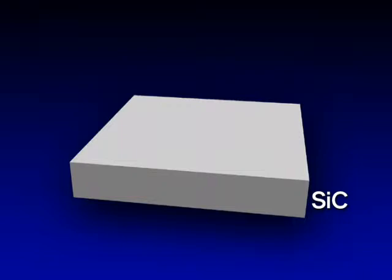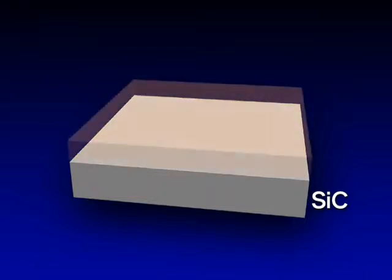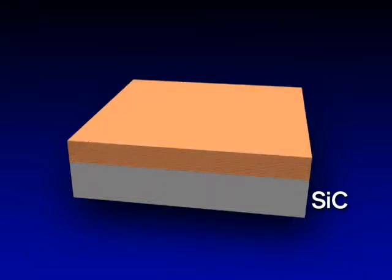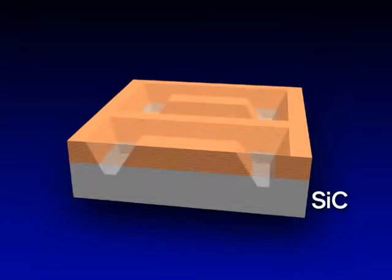First, the laser diode structure is grown on a silicon carbide substrate. Then the laser diode is cut out using photolithography and an etching process.